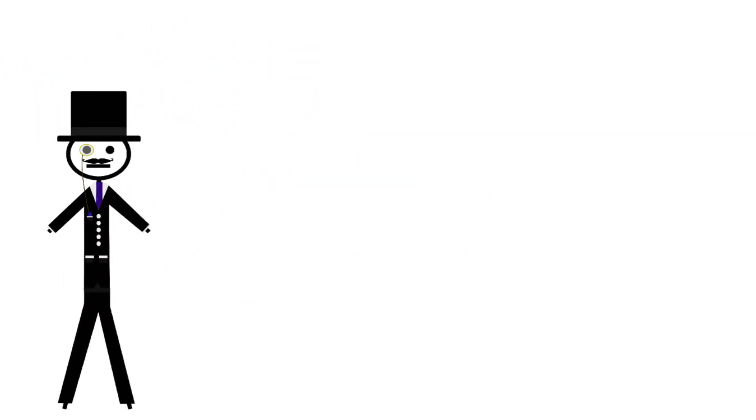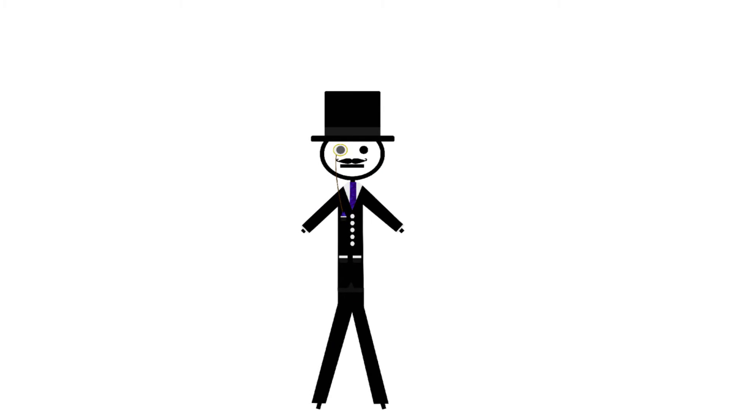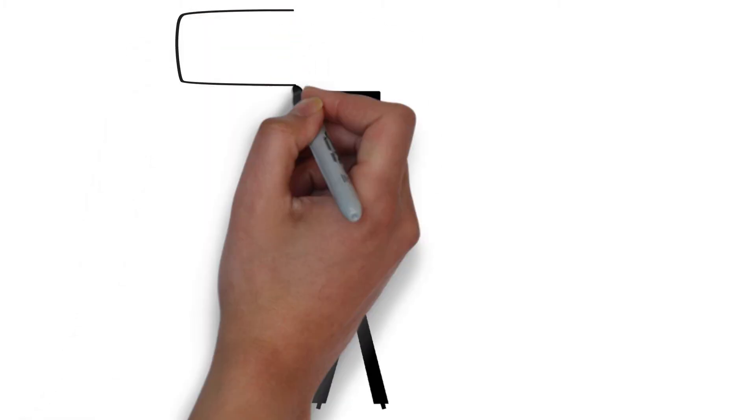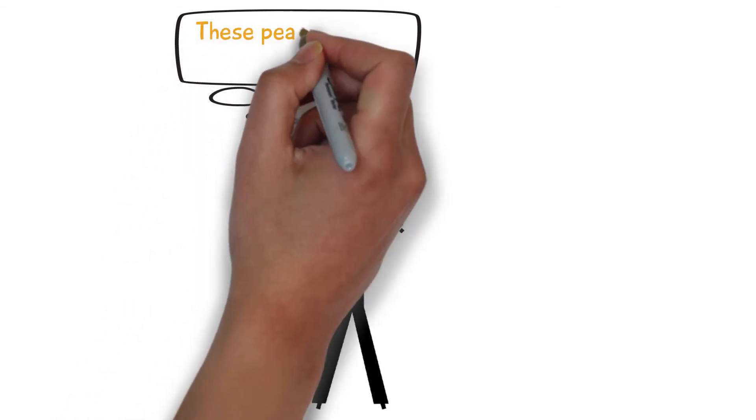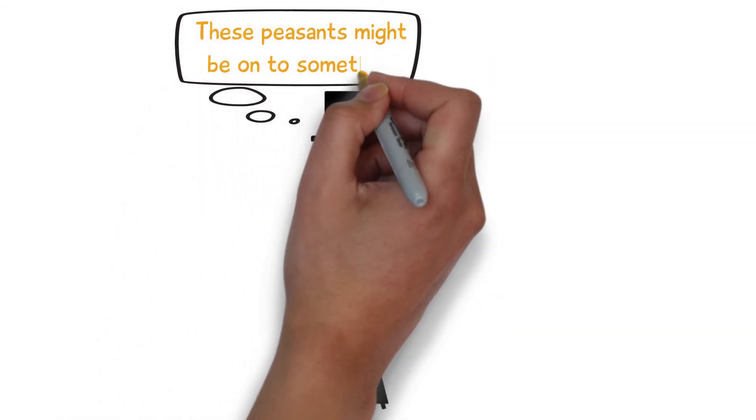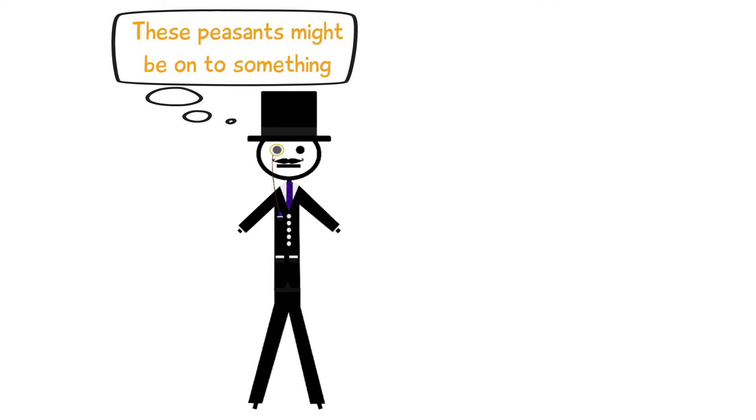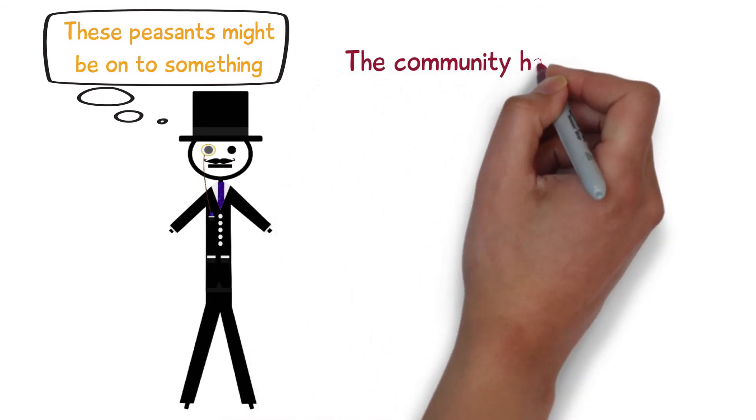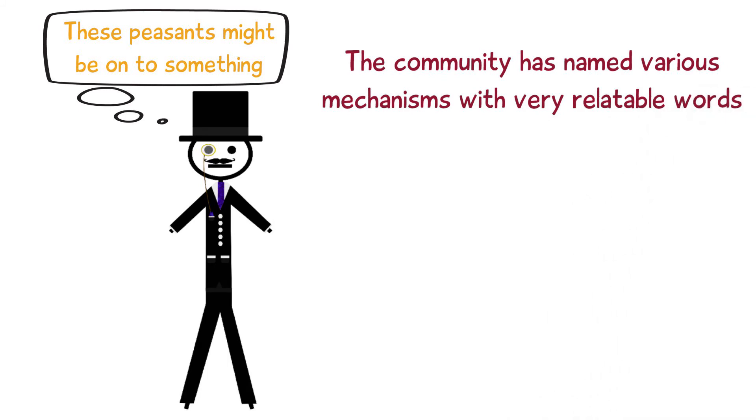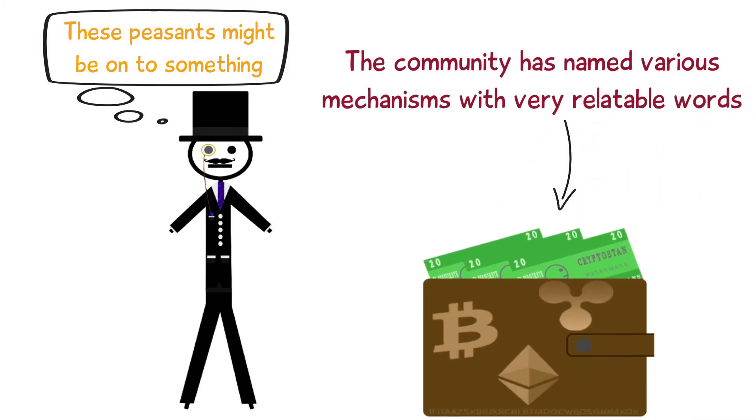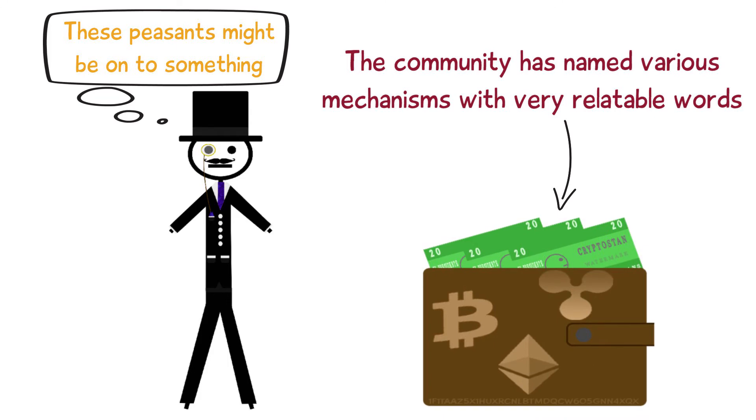Let's switch directions for a bit from big powerful groups of miners to you, the individual. Now that you've got a grasp of how this whole thing works you might be thinking to yourself, huh I'd like to get some of those bitcoins. But how does that actually work? Luckily for us the community has named various mechanisms in the network with very relatable words. The place you store your money is thus called your wallet. It does get a little more complicated than that though.